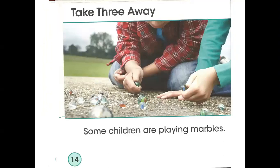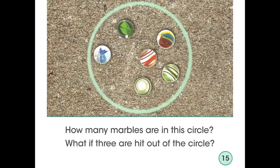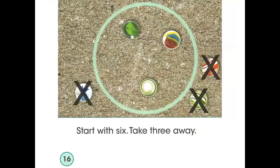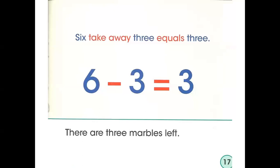Now I want to take three away. Some children are playing marbles. How many marbles are in this circle? Let's count them: one, two, three, four, five, six. What if three are hit out of the circle? Let's see. Start with six, take three and put them on the outside of the circle. How many marbles are left inside the circle? Six take away three equals three. There are three marbles left inside the circle.